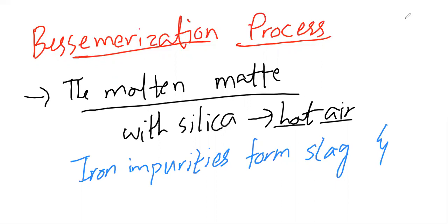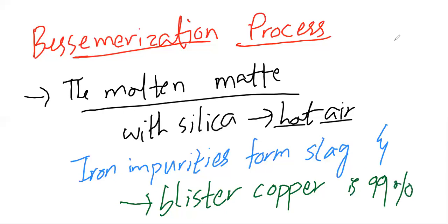Then the copper is obtained, and it is called blister copper. It is about 99 percent pure, but one drawback is that it is unfit for electrical works. It cannot be used in electrical wires. Then what we do is refining of copper.